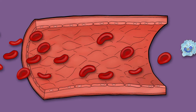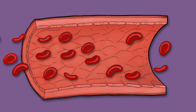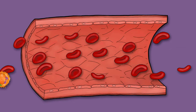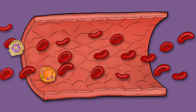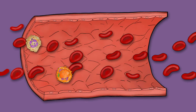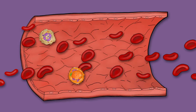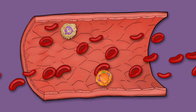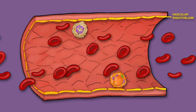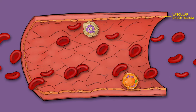The first step of leukocyte recruitment into infected tissues is dilation of blood vessels, resulting in slower blood flow. This allows leukocytes to interact with the vascular endothelium.